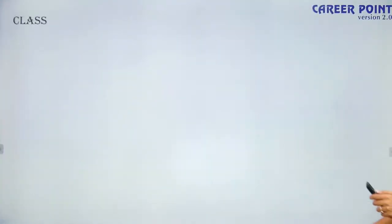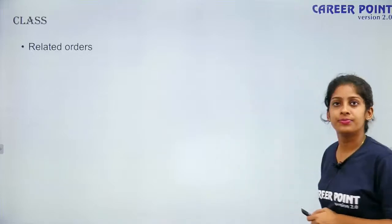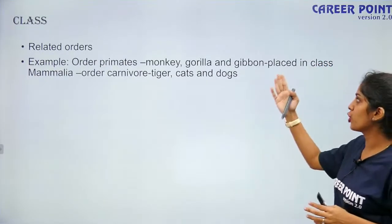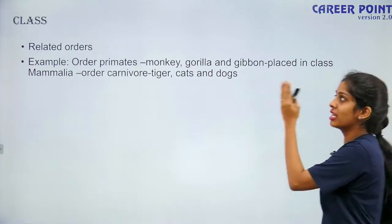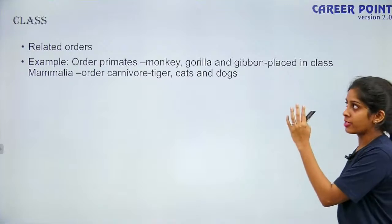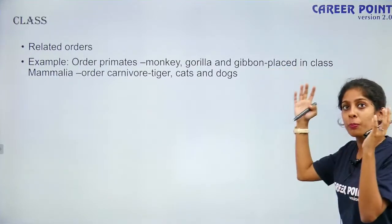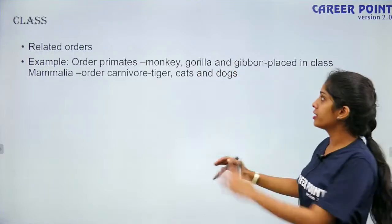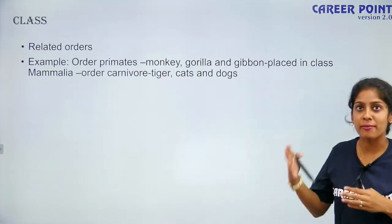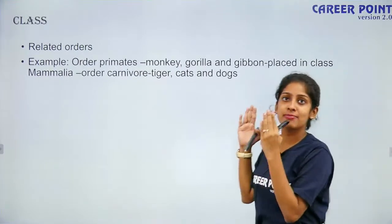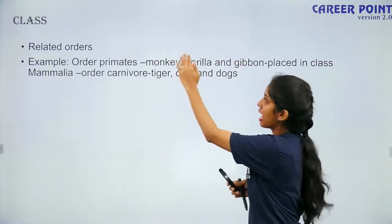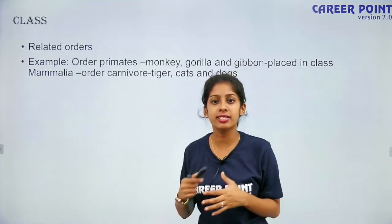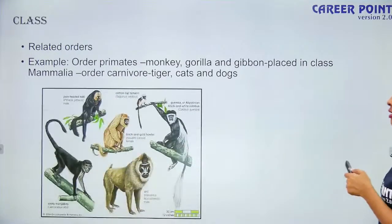The next one is class — a group of related orders gives you a class. For example, order Primates includes monkey, gorilla, and gibbon. They are placed together with class Mammalia. Order comes first and above them comes class — you group two related orders. One order is Primates, the other is Carnivora. Tigers, cats, and dogs; primates and carnivores — everyone are mammals. So you group them under a much broader term: class Mammalia.